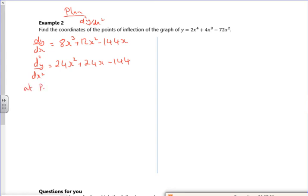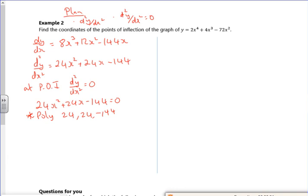Right then, so we know at the point of inflection, so let's play my plan. Now, I want d²y/dx² = 0. We shouldn't be starting to spot this now. So d²y/dx² = 0. So 24x² + 24x - 144 = 0. Line that into poly. So 24x² plus 144 gives us x = 2 or x = -3. I've got two points to check.